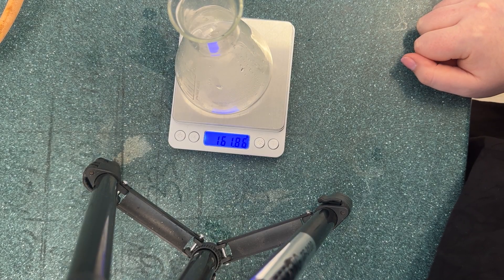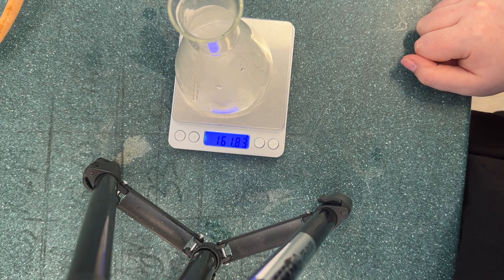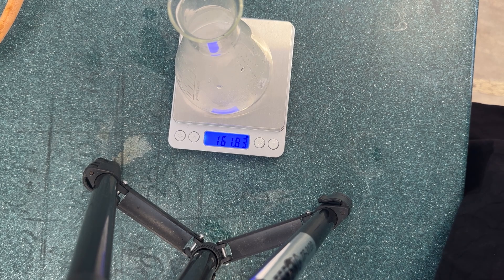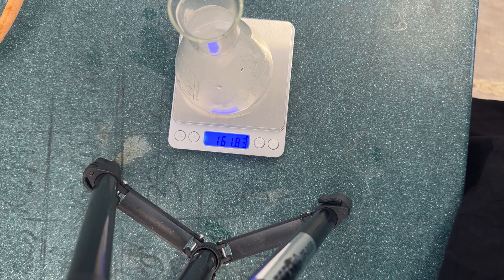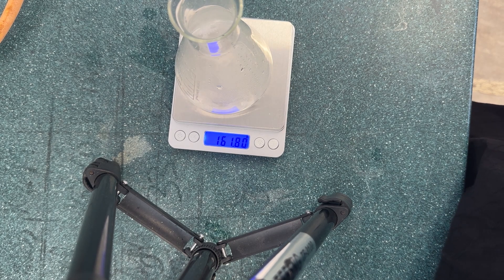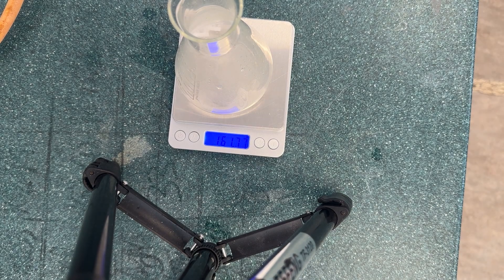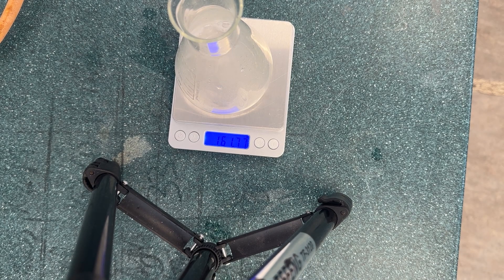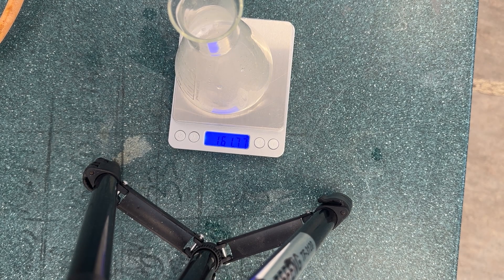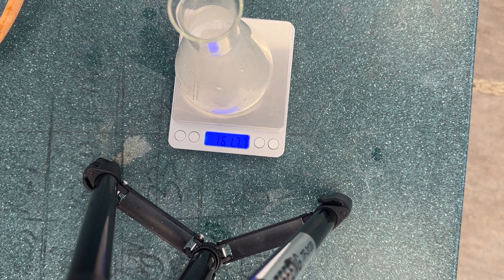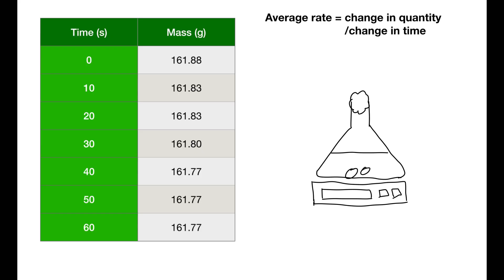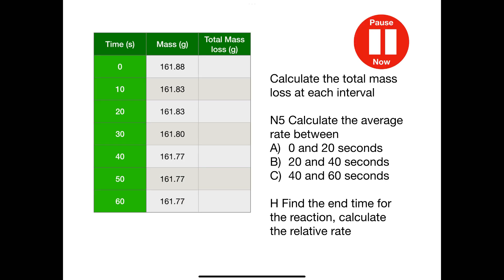As with measuring the gas produced, here you would measure the mass at certain time intervals. Here is an example of what your results might look like over a minute. Here is also a diagram of the equipment that you are using. Pause the video now and try these calculations for National 5 and higher.